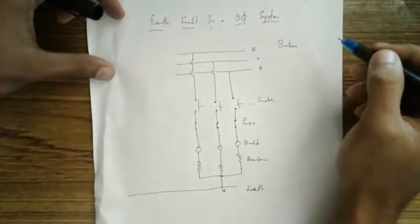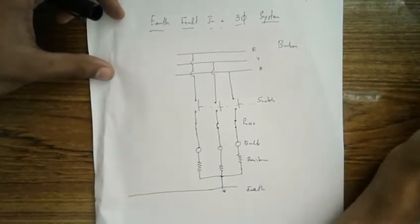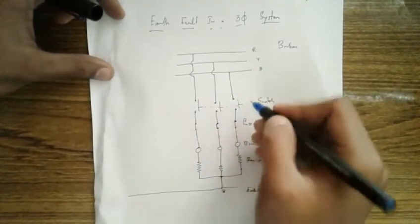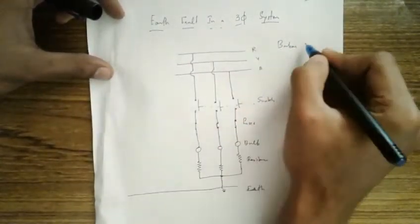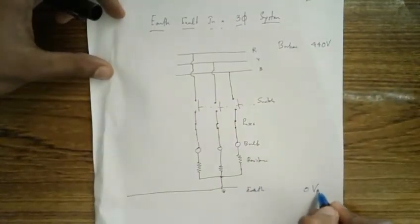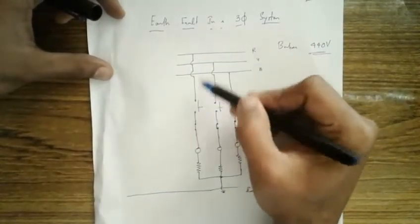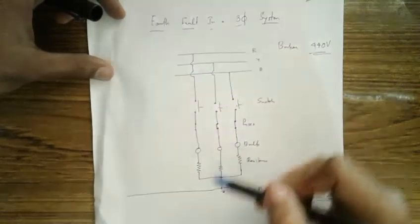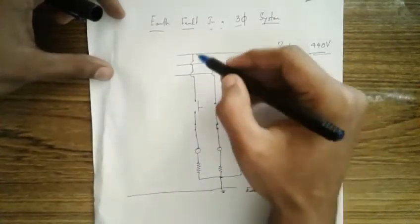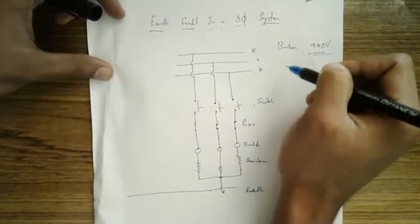This is a very simple diagram and I'll explain how it works. Suppose there is no earth leakage and I close this switch. We know this is a live wire R, Y, B, so the voltage here is 440V and the voltage at earth is zero. When I close this circuit, there is high potential here and low potential at earth.